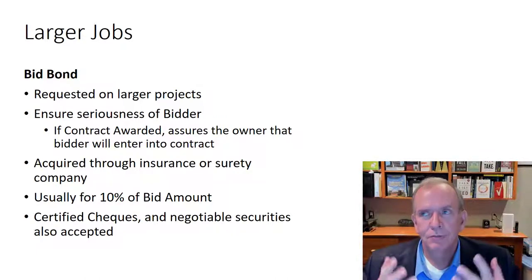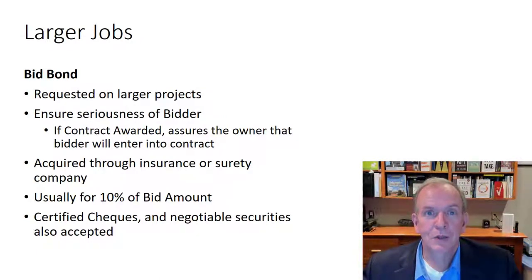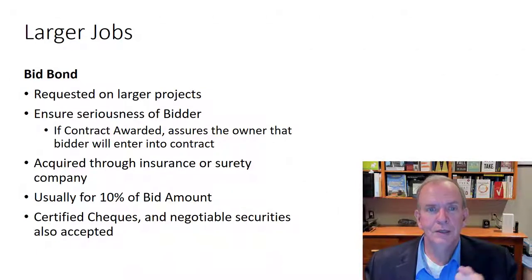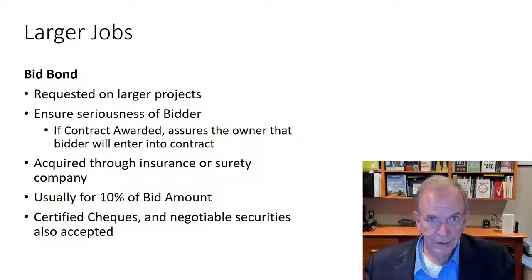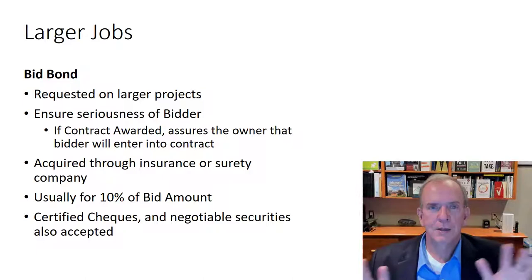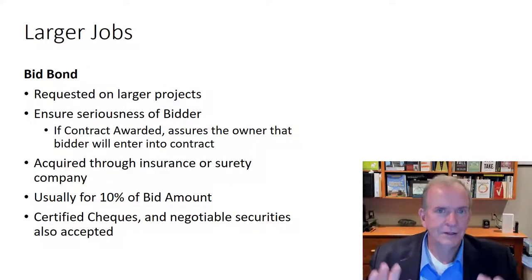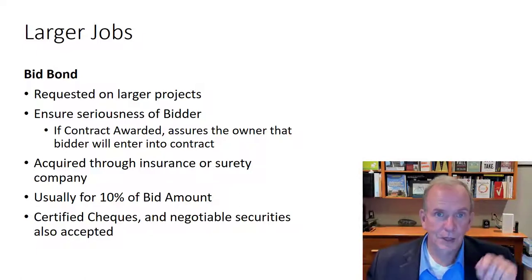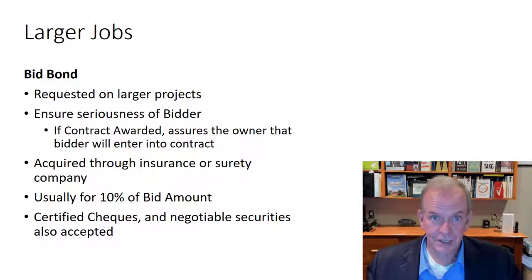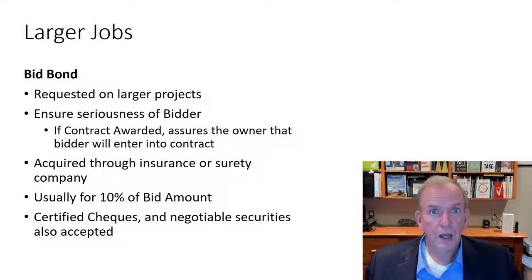There are different types of bonds. The bid bond — say it's a government project, they want a bid bond of ten percent. If they think it's a three million dollar project they want a three hundred thousand dollar bid bond, from a surety, saying that if your bid is accepted you're going to build this project. If you're that contractor who came in a million dollars cheaper, you can't just say you made a mistake and walk away — they're going to take your bid bond. The bonding company will come after you for that three hundred thousand dollars and you won't be able to bid on other projects again.